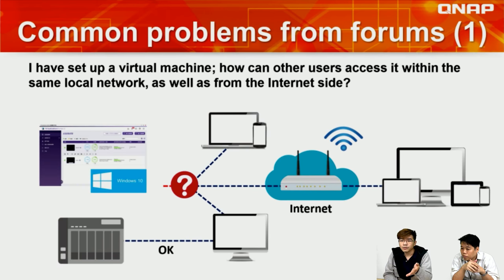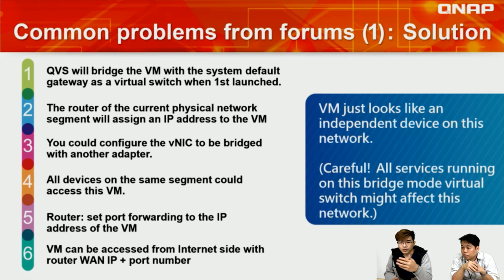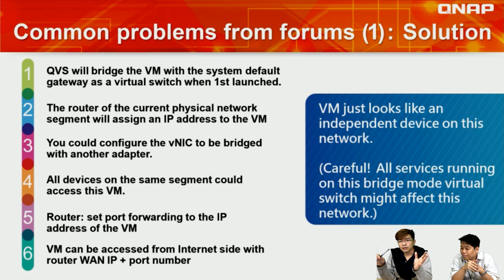Here is a common problem gathered from forums: if you have a virtual machine, how can other users on the same local network access it? Our solution is straightforward — just six steps from your TVS. Bridge the VM to the router of the current physical network, do the segmentation so it gets an IP address, complete the virtual NIC and bridge it to another adapter. When done, all devices on the same segment can access the VM.